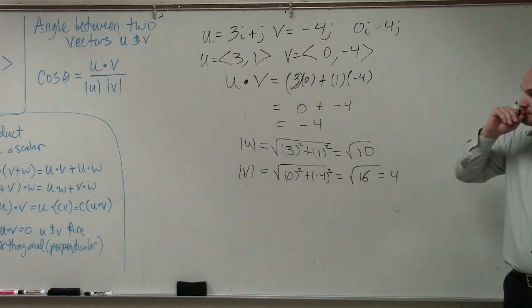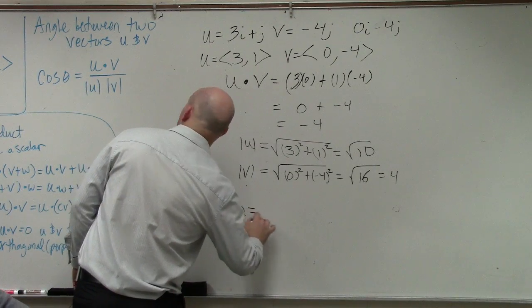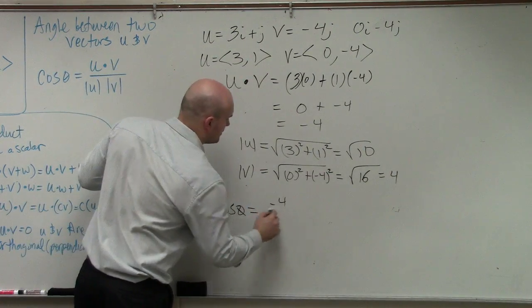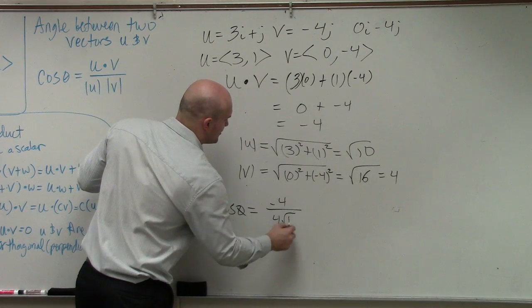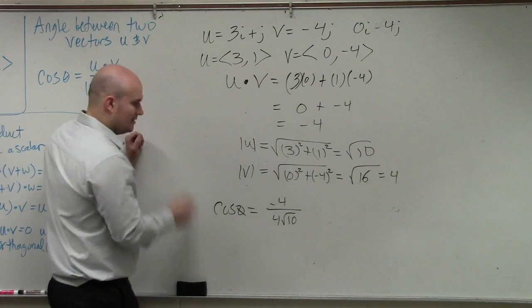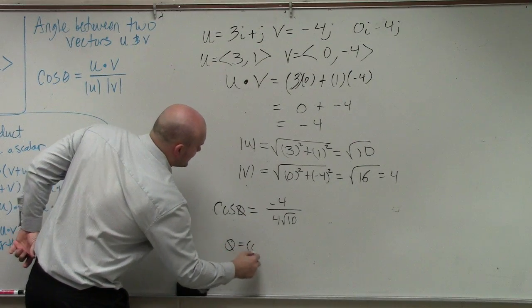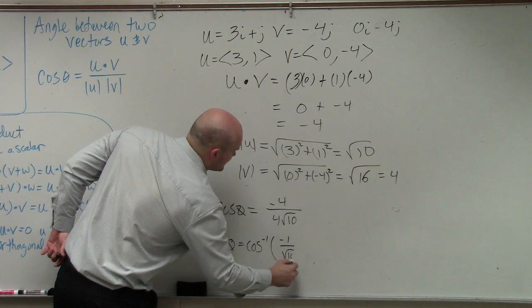Now we just write in the angle. The formula is cosine of theta equals the dot product, which is negative 4, over the product of 4 times the square root of 10. We can simplify this, so theta equals cosine inverse of negative 1 over the square root of 10.